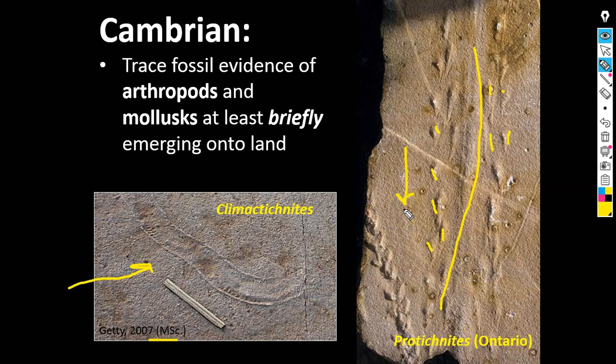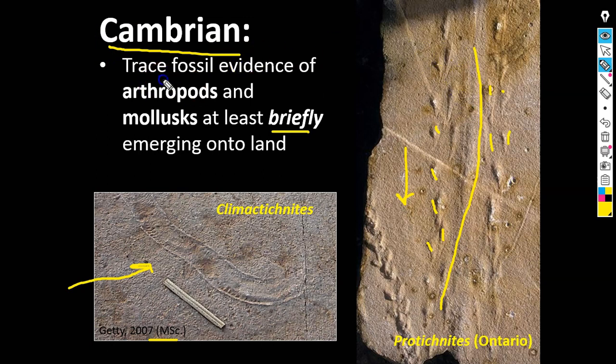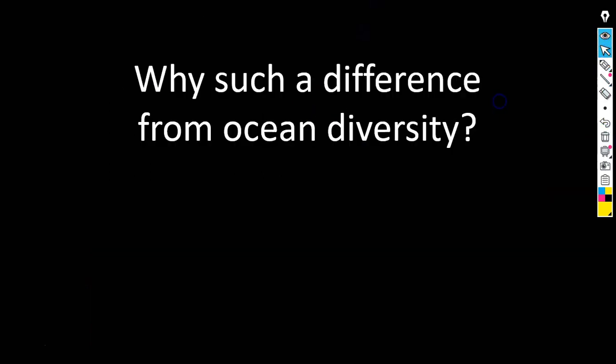These are marine organisms periodically moving up onto land and probably heading right back to the ocean afterwards. This is not evidence of actual habitation — it's brief journeys, potentially to lay eggs, escape predators, or for some other reason. By the Cambrian, organisms are probably crawling up onto land and going back, but there's no fossil evidence of organisms continuously living on land. By the time we get into the Ordovician, things change. But it's worth asking why, because by then we've got fully fleshed-out oceans with diversity approaching what we have today.